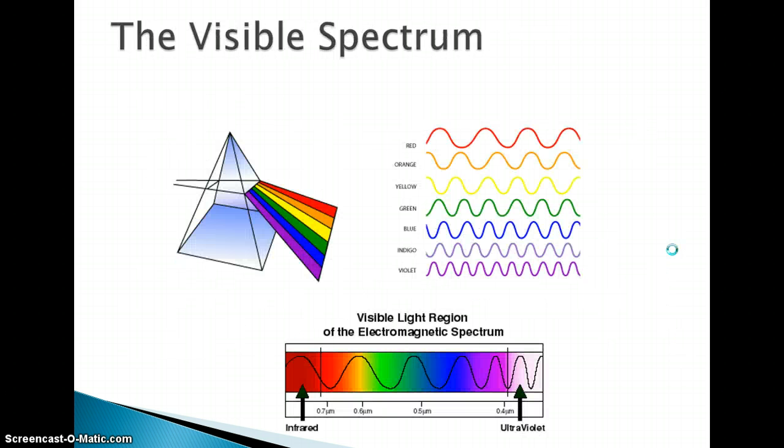The visible spectrum breaks down into the colors that we see. And the acronym to remember that is ROYGBIV, which stands for red, orange, yellow, green, blue, indigo, violet. And if we notice, the red has that longest wavelength, and the violet, that UV light, has the shortest wavelength.